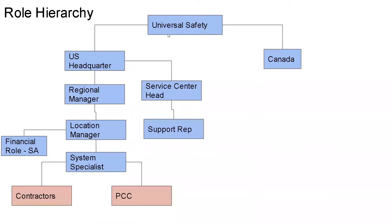Coming to the role hierarchy: there would be a Universal Safety Headquarters, then a US Headquarters — a similar hierarchy would be repeated for Canada. There would be a Regional Manager reporting to the headquarter person, a Location Manager reporting to the Regional Manager, and a System Specialist reporting to the Location Manager. Contractors are external users, so they would be reporting to the System Specialist. Primary customer contacts are CC Plus users and will be reporting to accounts owned by the System Specialist role.